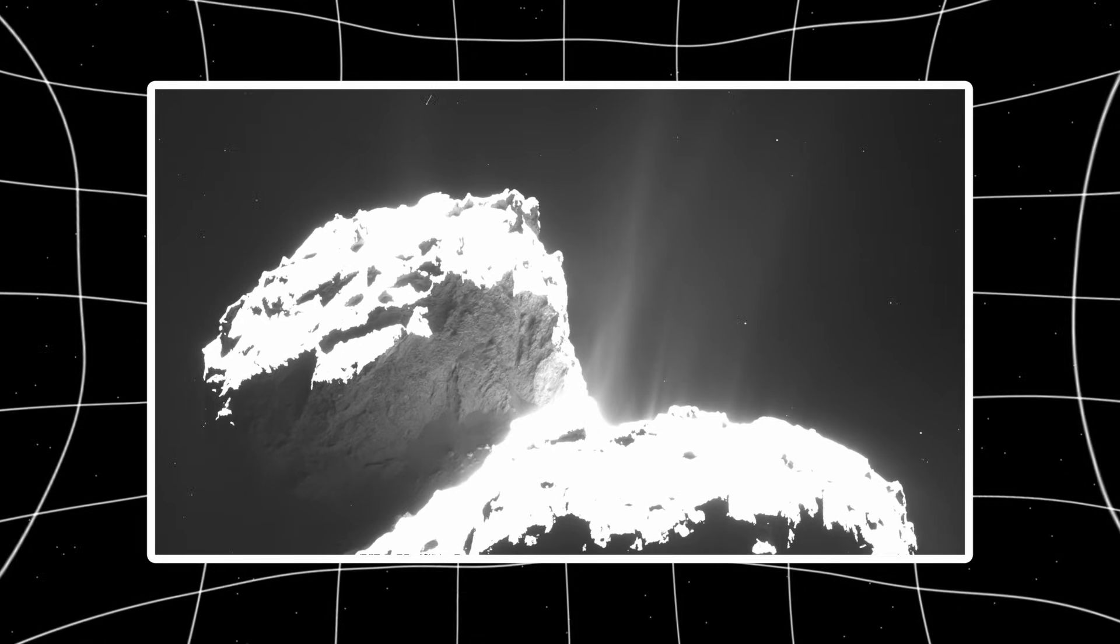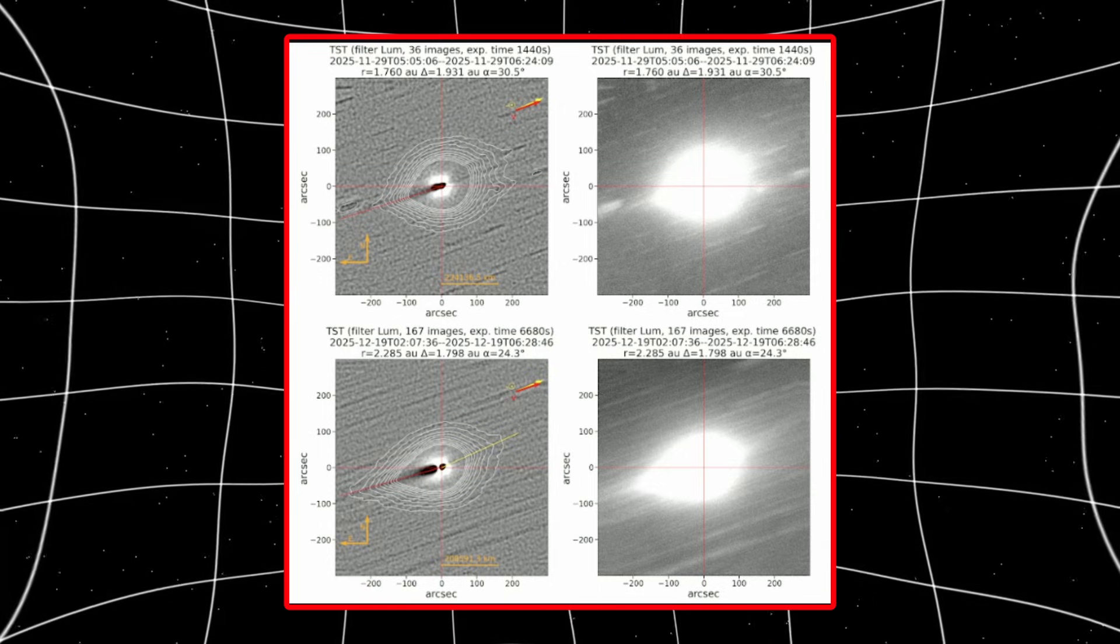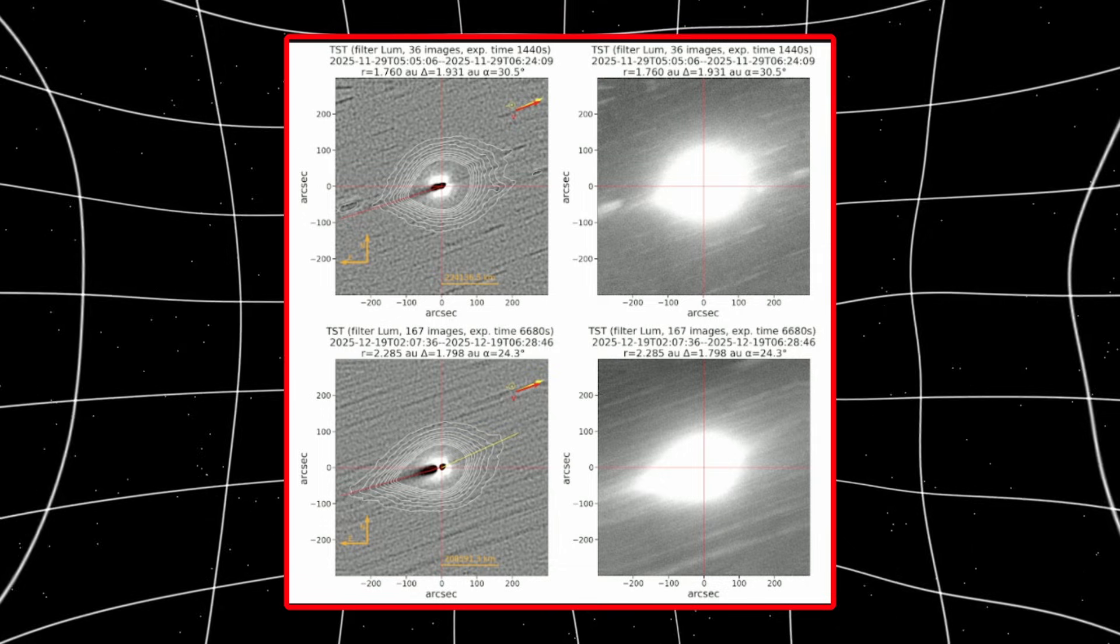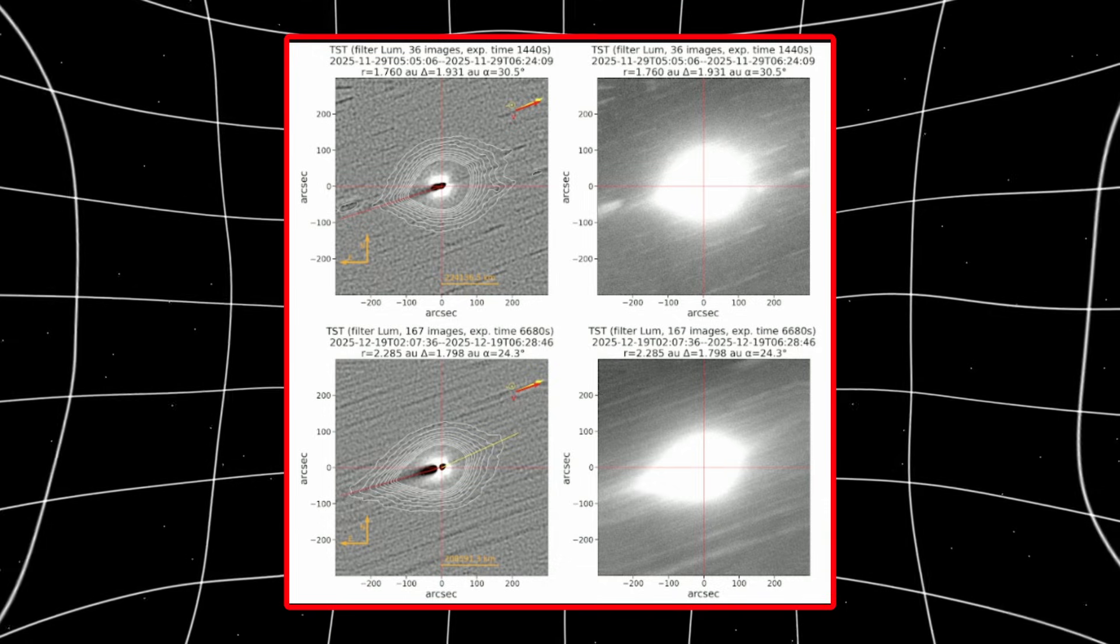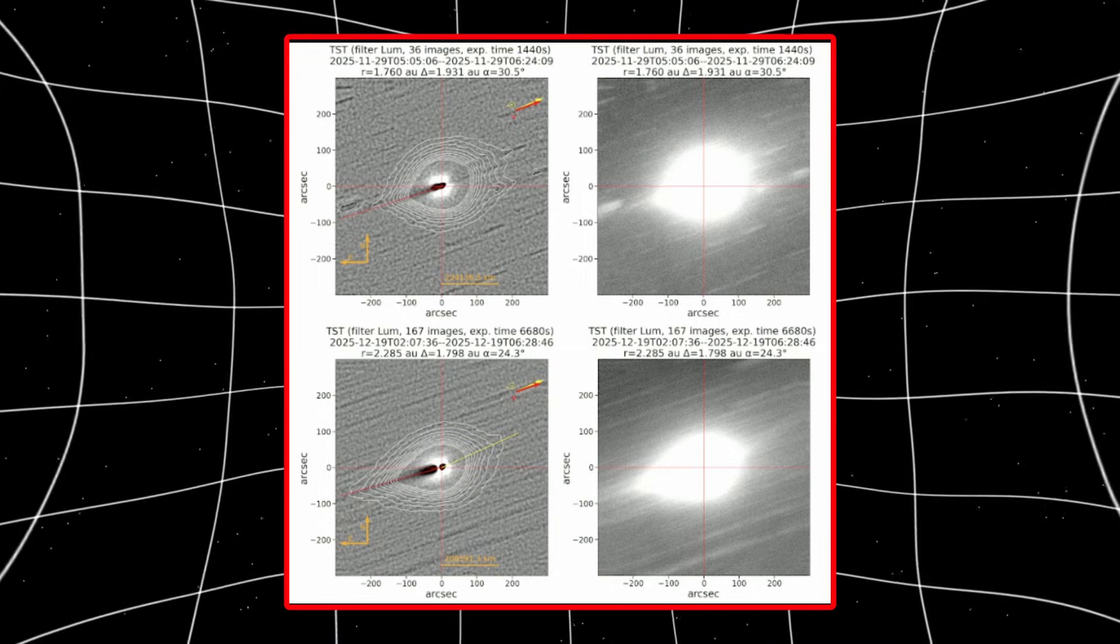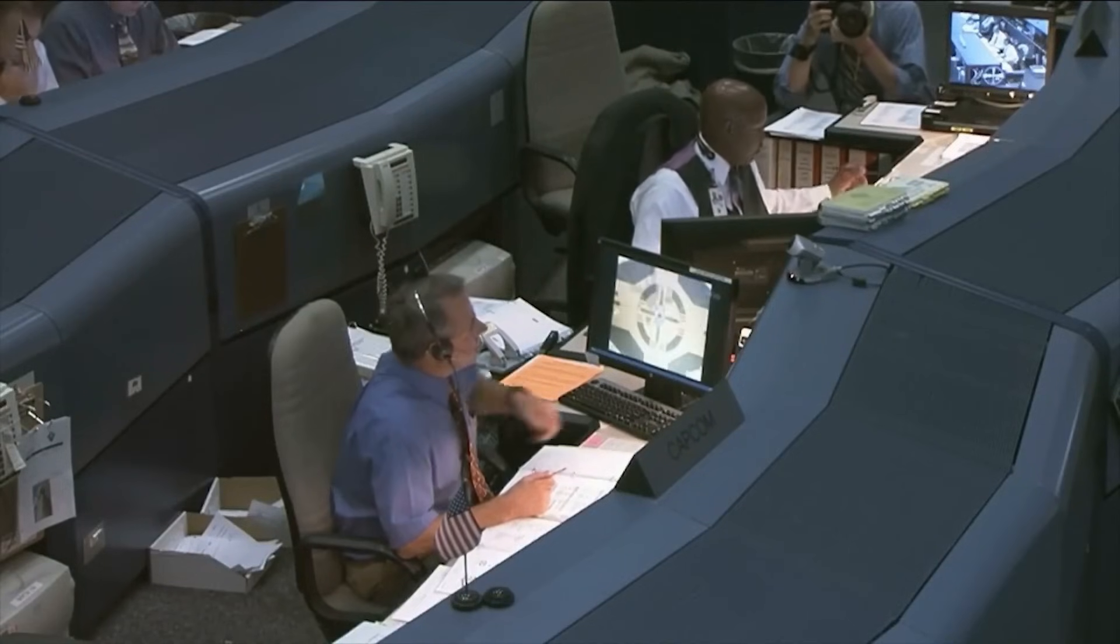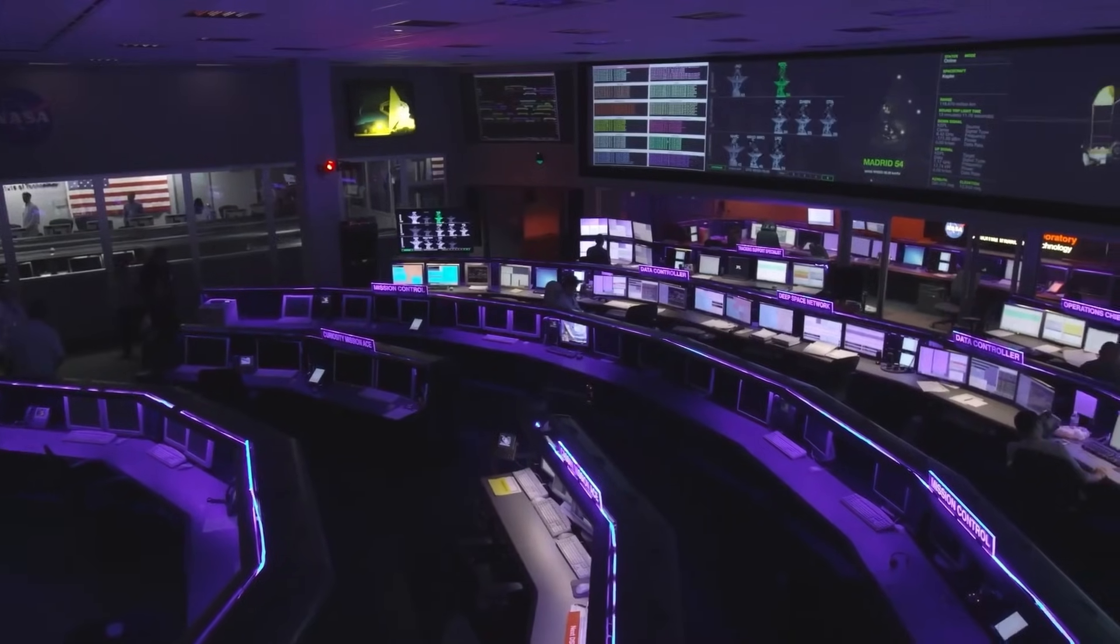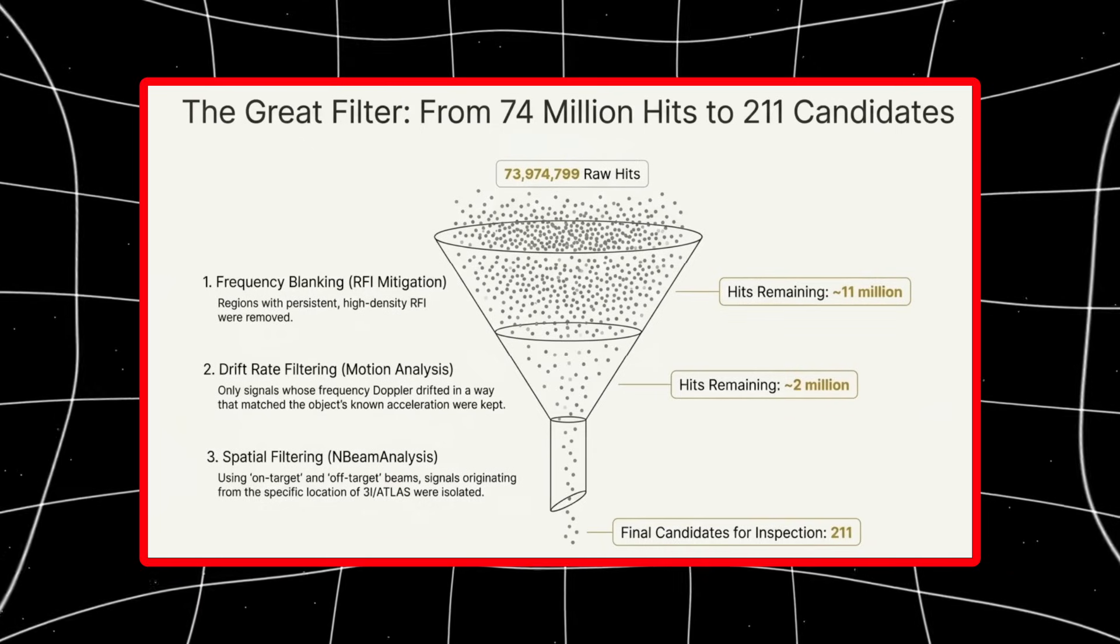So let's talk about what happened when scientists actually tested this thing. The Allen Telescope Array is designed for one purpose: listening. Not for sounds, for signals. Narrowband radio transmissions, the kind that can't be produced by natural astrophysical processes. The kind that would stand out against background noise like a laser pointer in a thunderstorm. Shortly after 3i Atlas was discovered, a team aimed the array directly at it and scanned from 1 to 9 gigahertz. That's the sweet spot where artificial signals are most likely to hide. The scan produced 74 million initial detections. Let me say that again: 74 million.